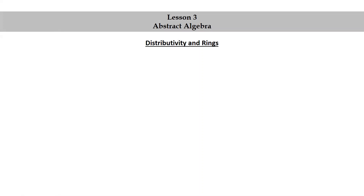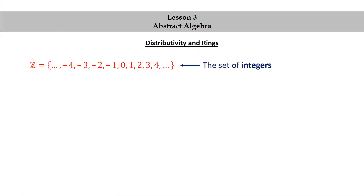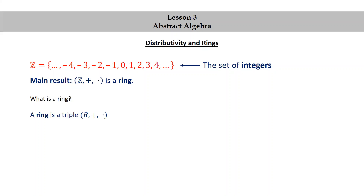Distributivity and rings. Recall that ℤ (double-struck Z) is the set of integers. The main result we want to get to is that the set of integers together with addition and multiplication is a ring. So what is a ring? A ring is a triple (R, +, ×) where R is a set and + and × are binary operations on R, satisfying a collection of properties.